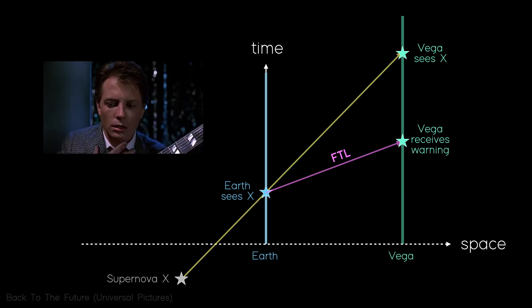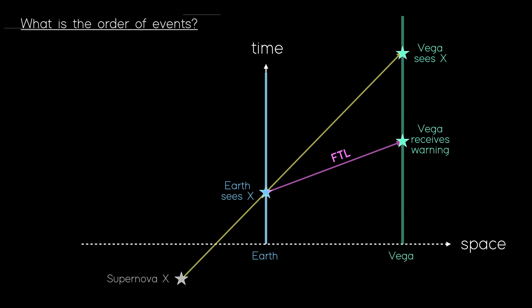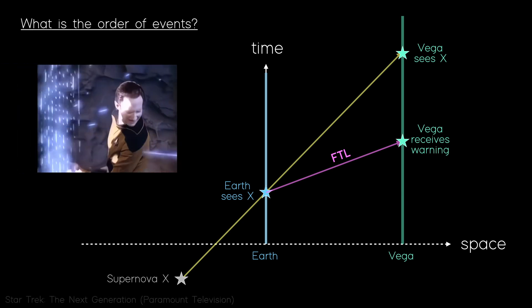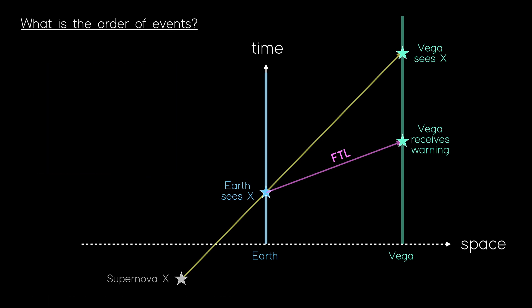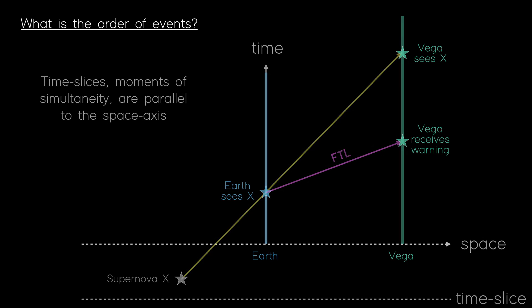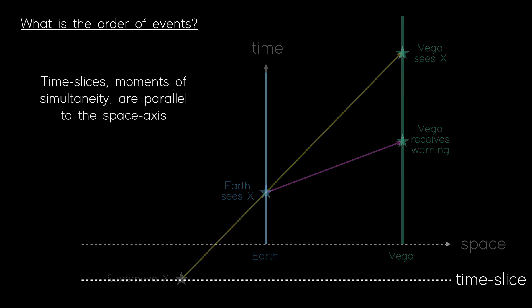Now, remember I said earlier that the whole problem with FTL systems comes down to causality. So, let's look at the order of events here to see if everything makes sense. For this, we need to work through time from the past to the future and track this sequence that occurs. We can do this by taking a slice through time, a simultaneous moment, and slide it up the screen from bottom to top, noting the sequence of events we see.